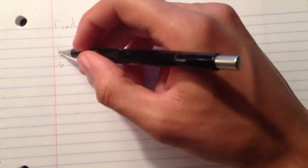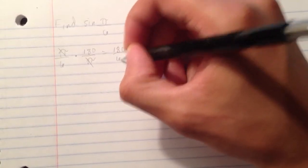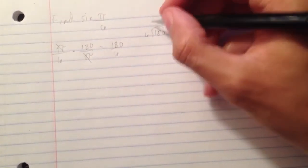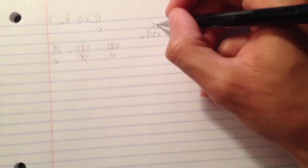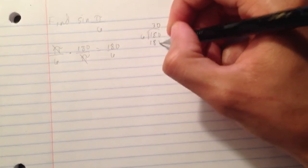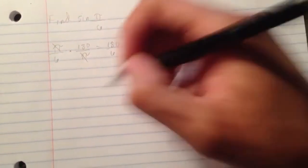And then you cancel out the pi's. Pi could cancel out with pi and you're left with 180 over 6. If you do your computation, you could know that 6 goes into 180 three times. You have a 0, pull another 0 in, then it'll give you 180. And now you have 30.